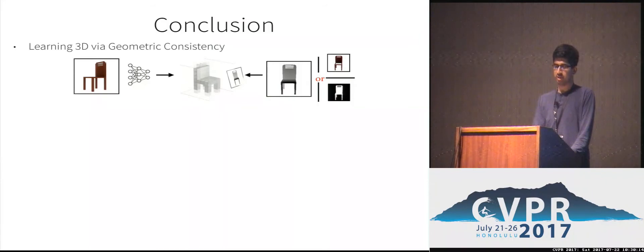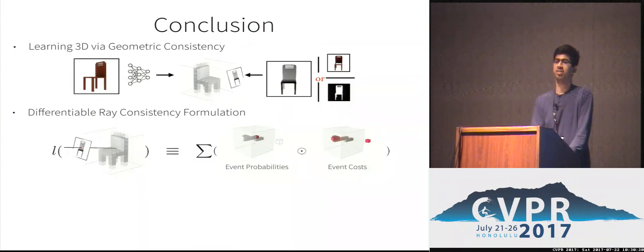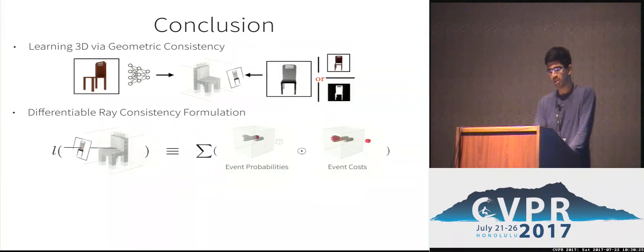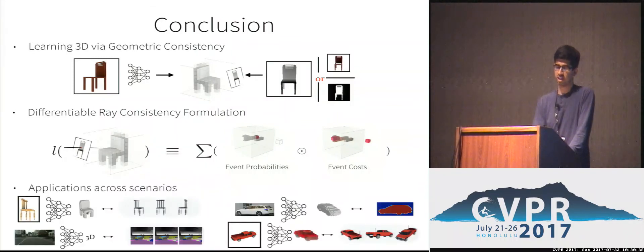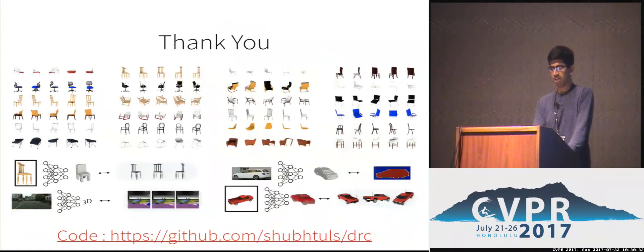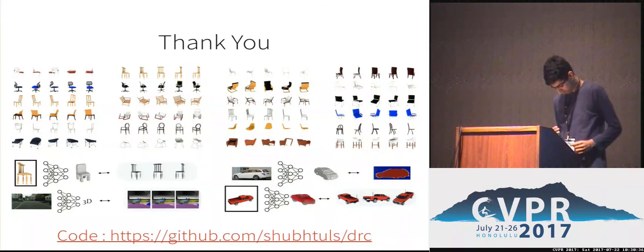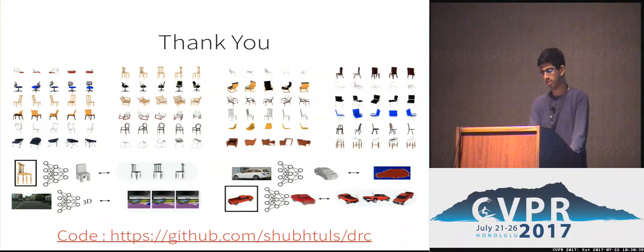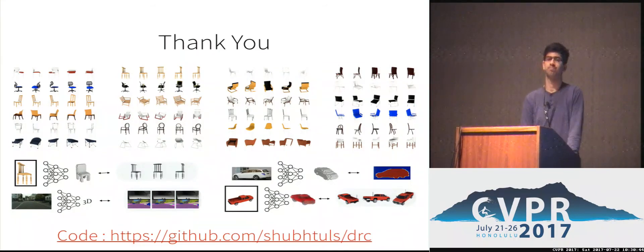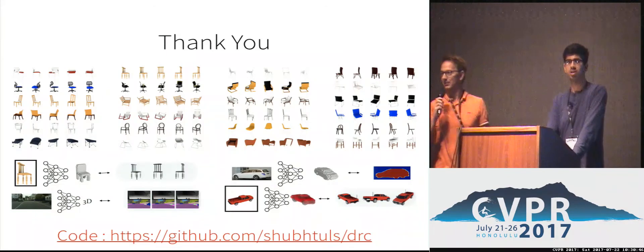That concludes the formulation and its applications. There are three key points to take back. First, we can learn 3D prediction without ground truth 3D supervision by leveraging geometric consistency. Second, we presented a ray consistency based formulation to operationalize this idea of learning through geometric consistency. And lastly, this allows us to learn single view 3D reconstruction across many diverse scenarios. We have released code — hope you find it useful for research.